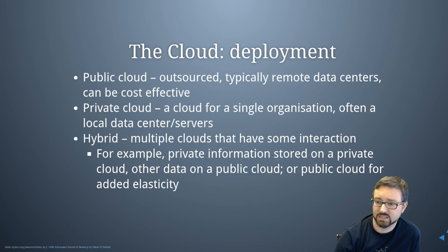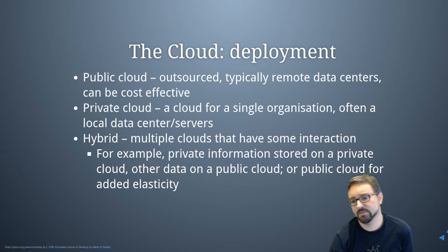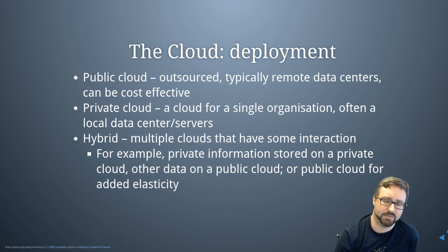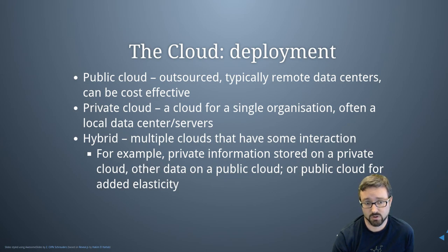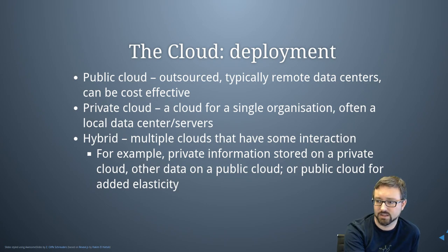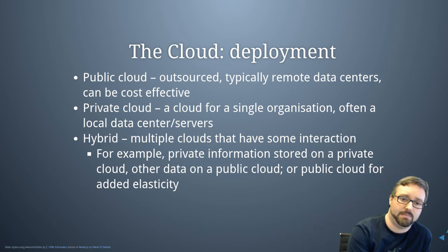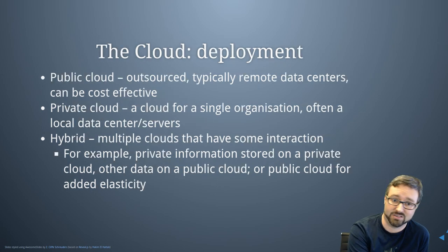A hybrid approach is where you do a bit of both — using public cloud infrastructure and also some private cloud. You might have particularly confidential information that you don't feel comfortable storing remotely, so you keep that on premises with a private cloud deployment. You might use the public cloud for added elasticity — for example, if you meet your capacity and need more, you can use an external provider to get the extra bit when you need it.